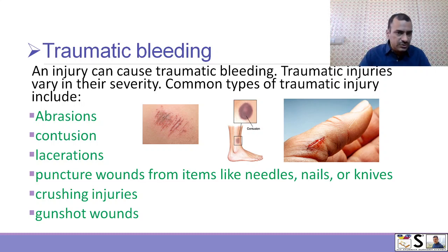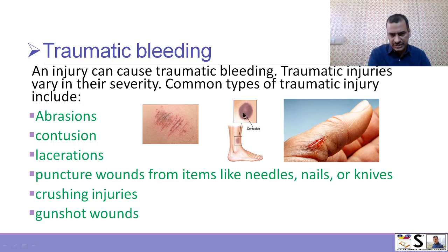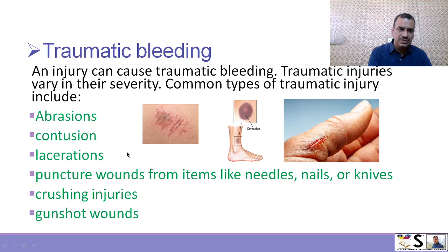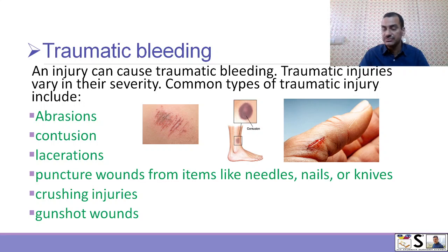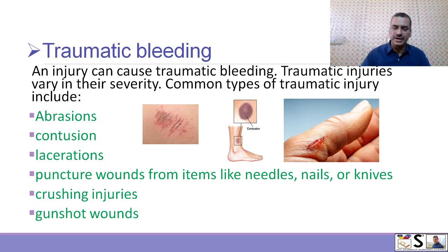Second is contusion. Contusion is the collection of blood in subcutaneous tissue and it becomes bluish like this. Laceration means wound formation. Puncture wound from sharp items like needles, nails, or knife. Crushing injury and gunshot wounds may also lead to traumatic bleeding.